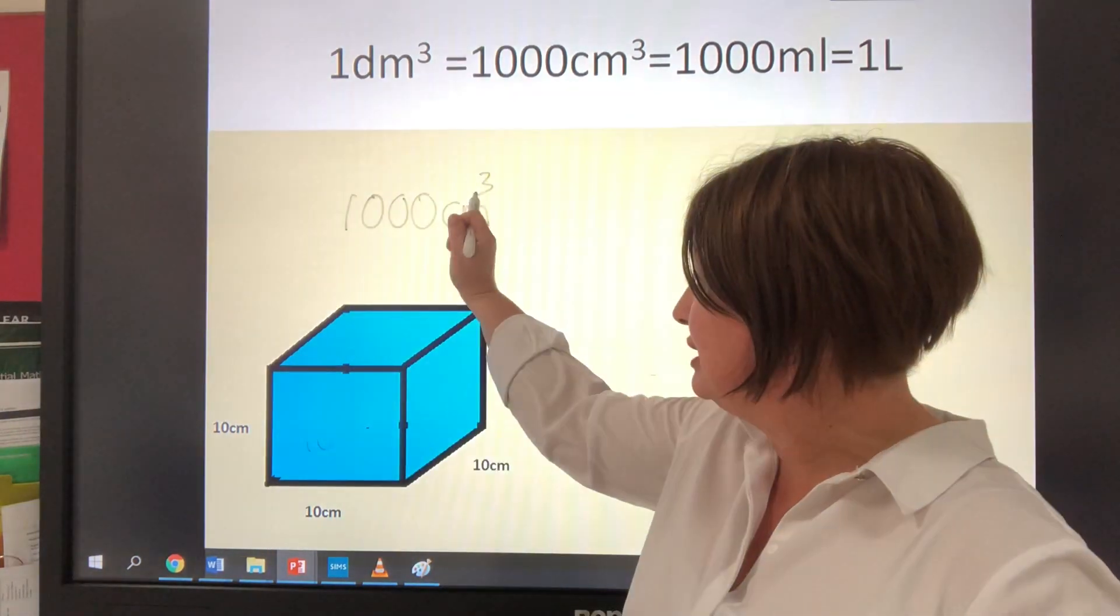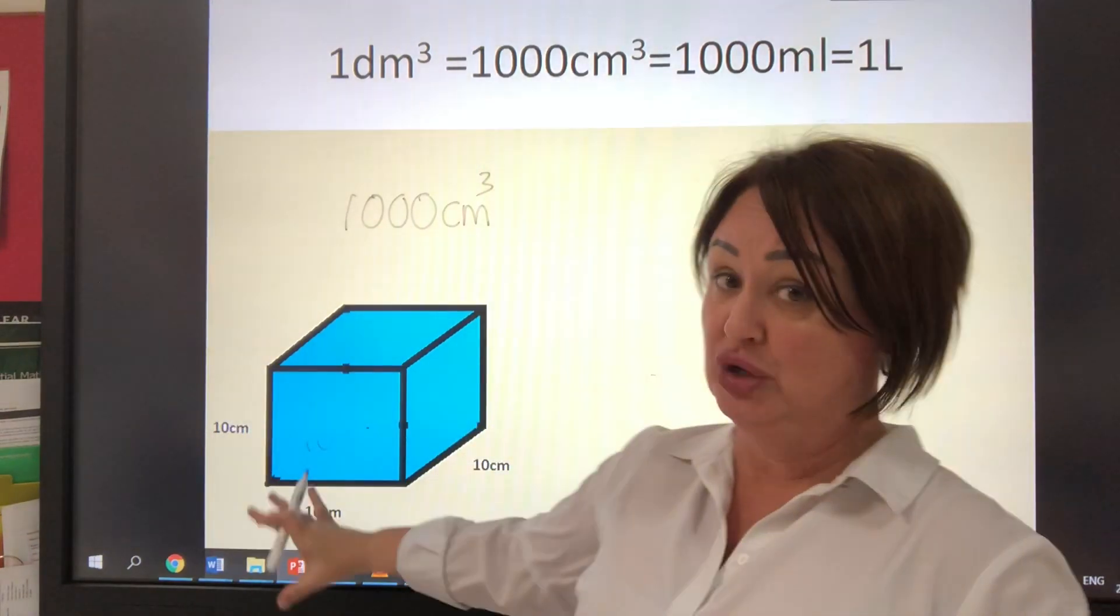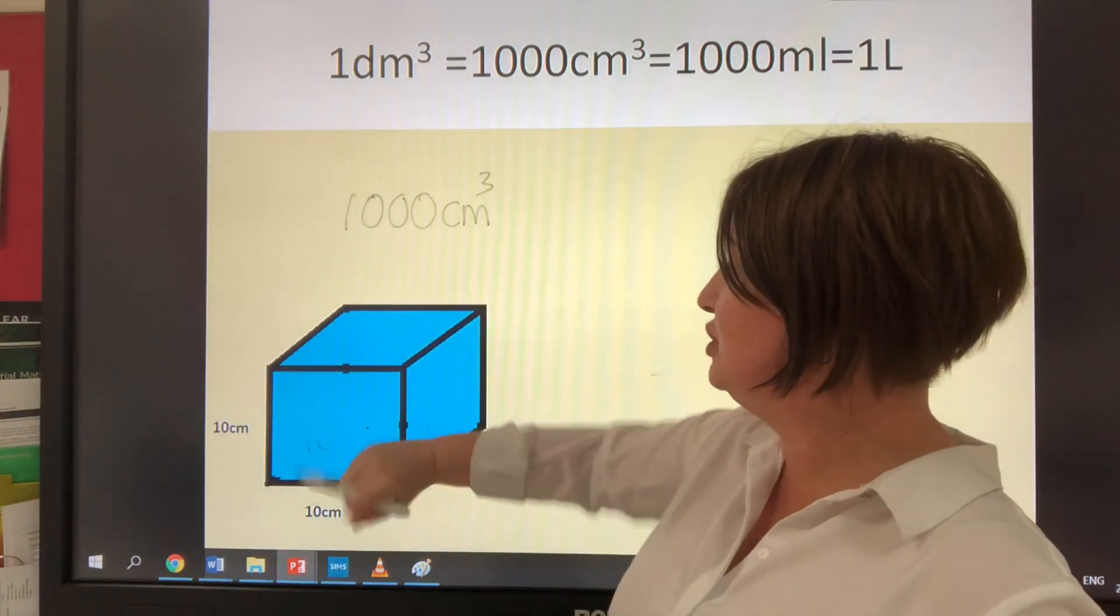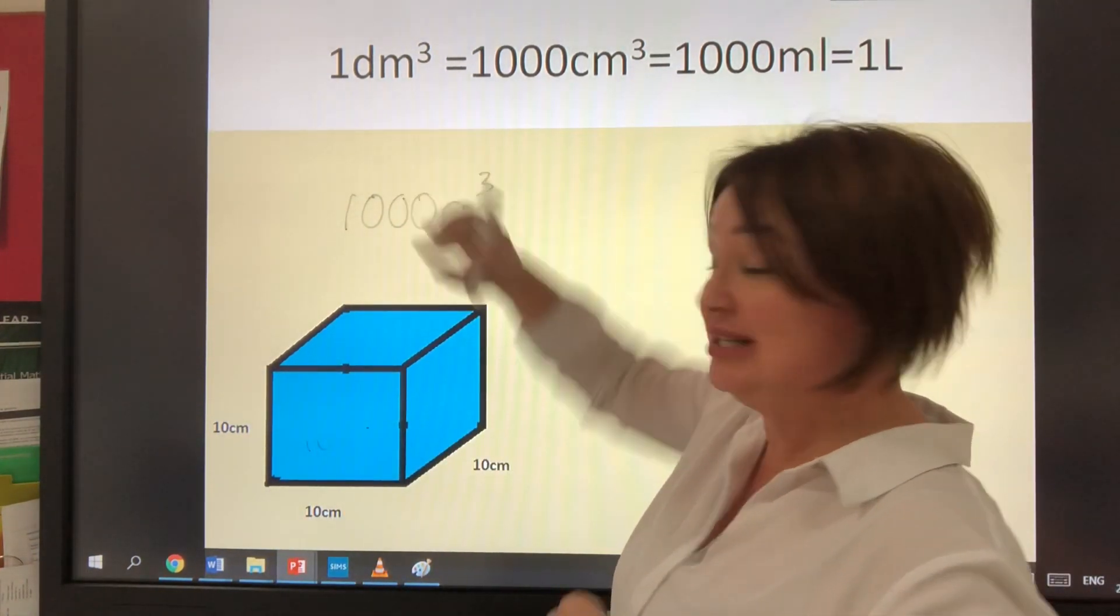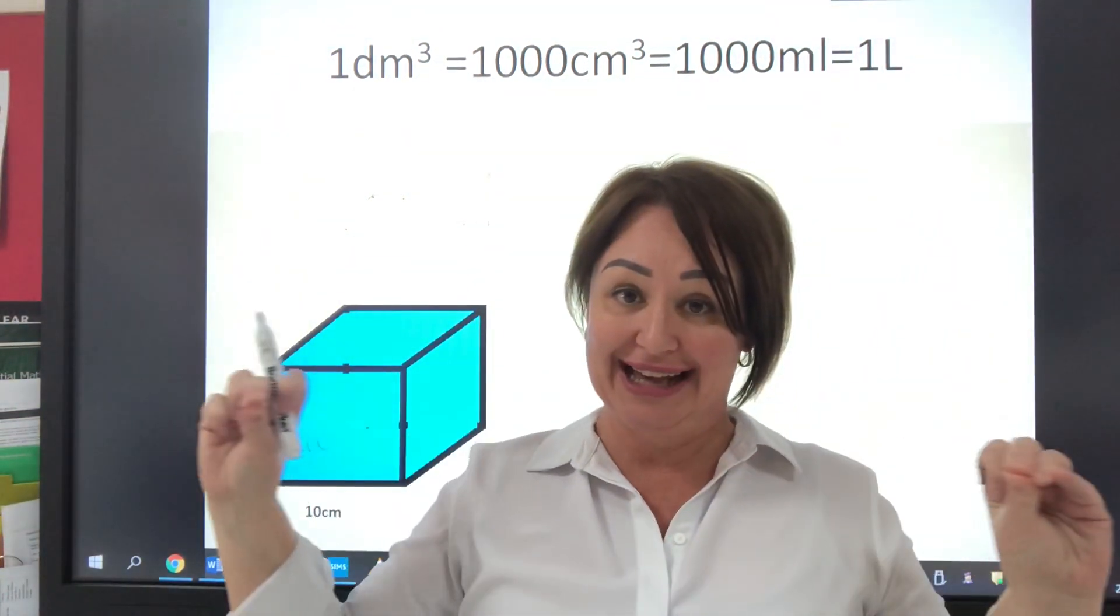The cube denotes that this is a volume. We have to add that because if we just had a thousand centimetres, that would mean it was a linear distance.